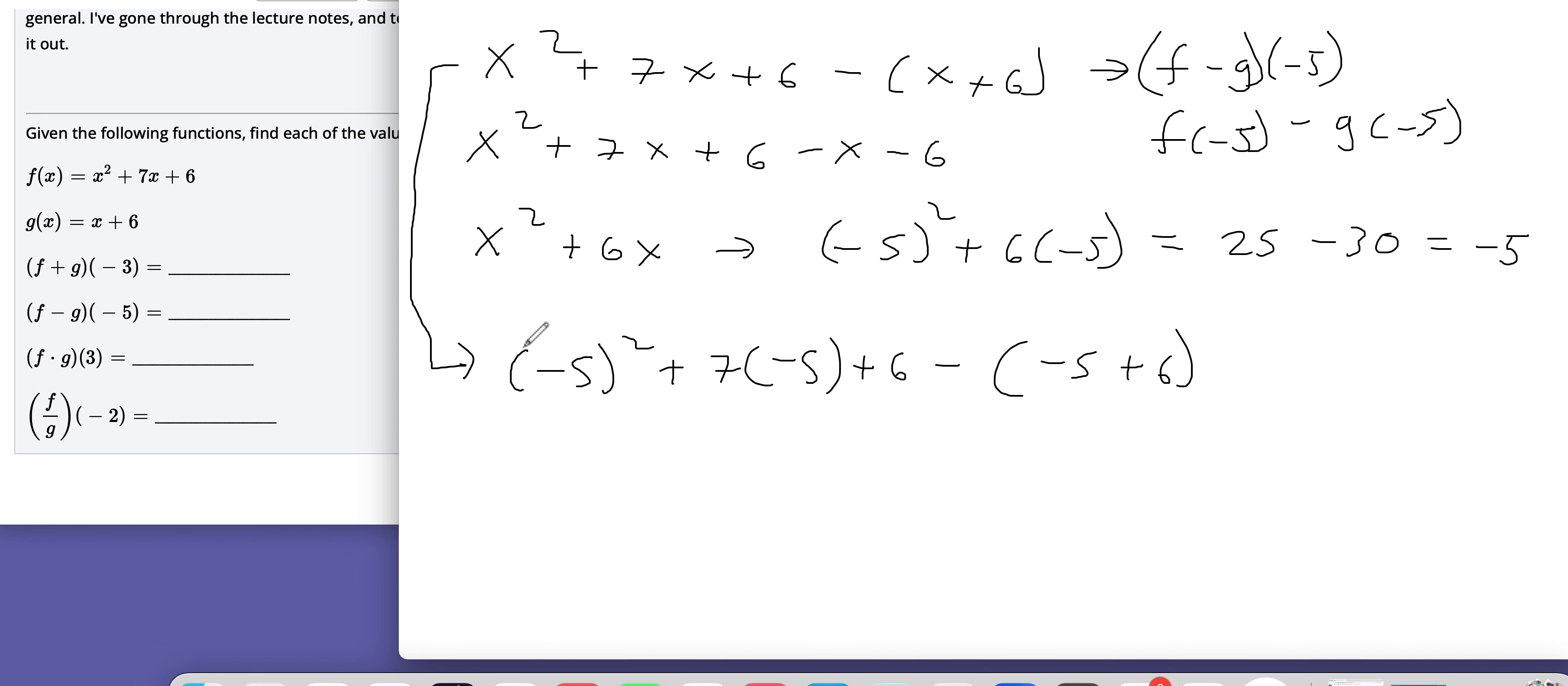So let me hop back down here now. So this is more like this, where I'm plugging the negative 5 into each function. And then that's going to make a positive 25, a minus 35, and a plus 6. And then that's going to be minus negative 5 plus 6. That would be a 1.